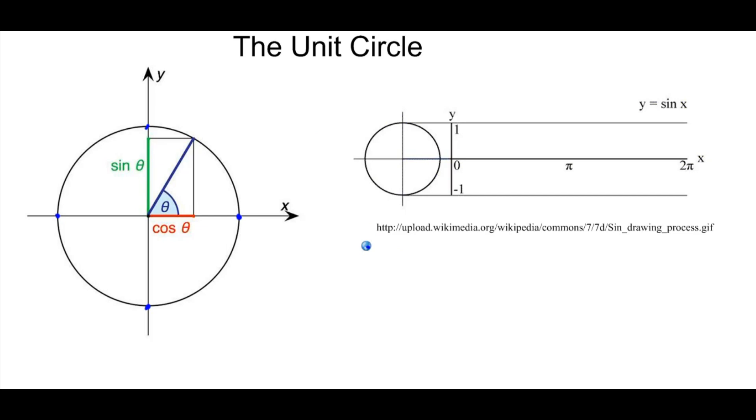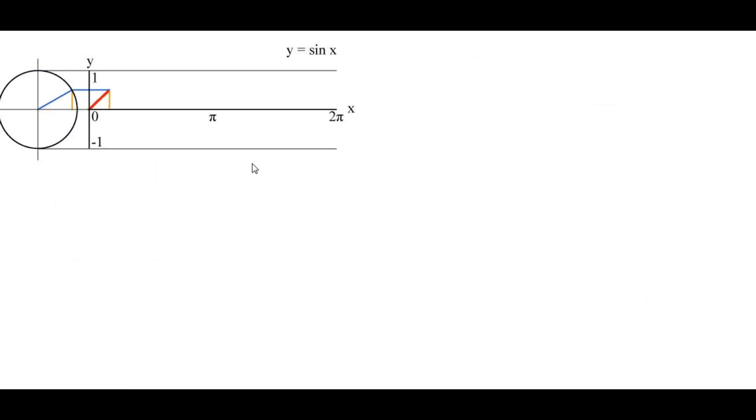In particular, consider the following. Here is the graph of sine of x. Now, x is your angle of the unit circle. You can see here that when x is equal to pi over 2, right here, sine is 1.